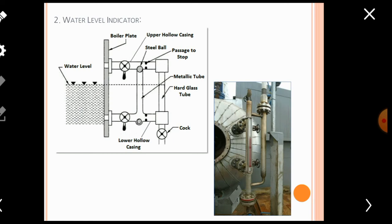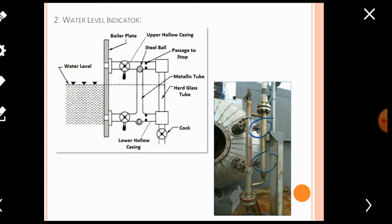The right-hand side diagram shows the actual water level indicator mounted on the boiler shell. You can see the steam horizontal pipe and the water horizontal pipe, mounted on the steam space and water space respectively. There are two valves — one steam valve and one water valve — along with the hard glass tube and, nearby, the metallic tube.